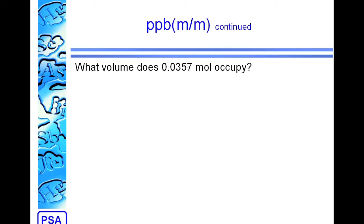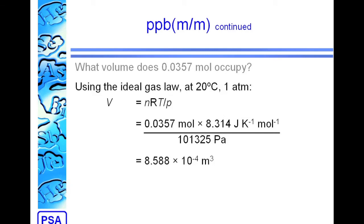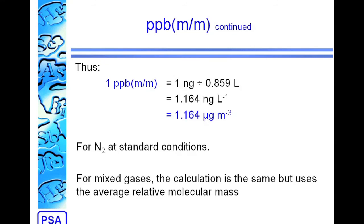The next question to ask is what volume does that amount occupy? Here, we again use the ideal gas law and we're again using standard conditions and we end up with 8.6 times 10 to the minus 4 cubic meters. Then, bring those two parts of the expression back together again. We said 1 PPB was 1 nanogram per gram, so that's the same as 1 nanogram per 0.86 liters, which simplifies down to 1 PPB mass is 1.164 micrograms per meter cubed for nitrogen at standard conditions.